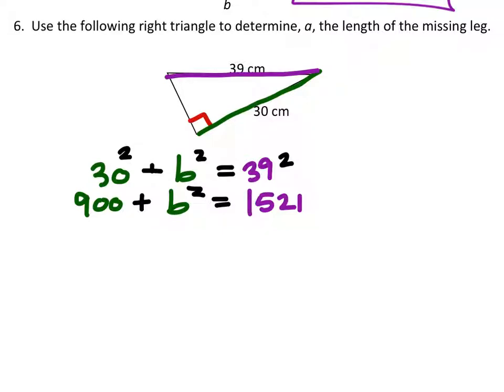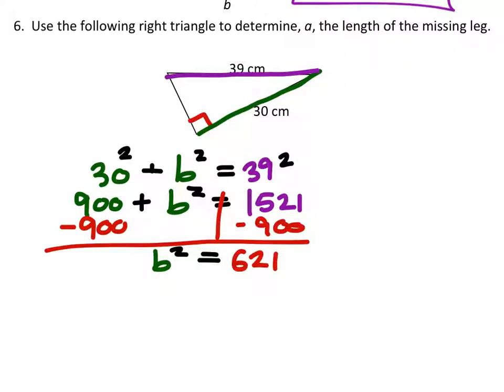Now to solve for B squared, let's subtract 900 from both sides. And then finally, to solve this, we'll just square root both sides, which leaves us with B equals the square root of 621.